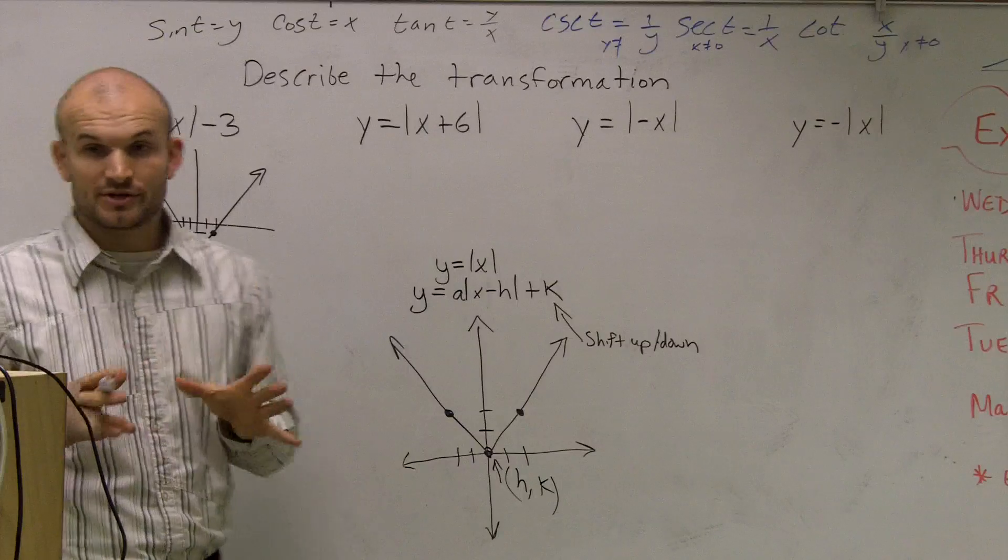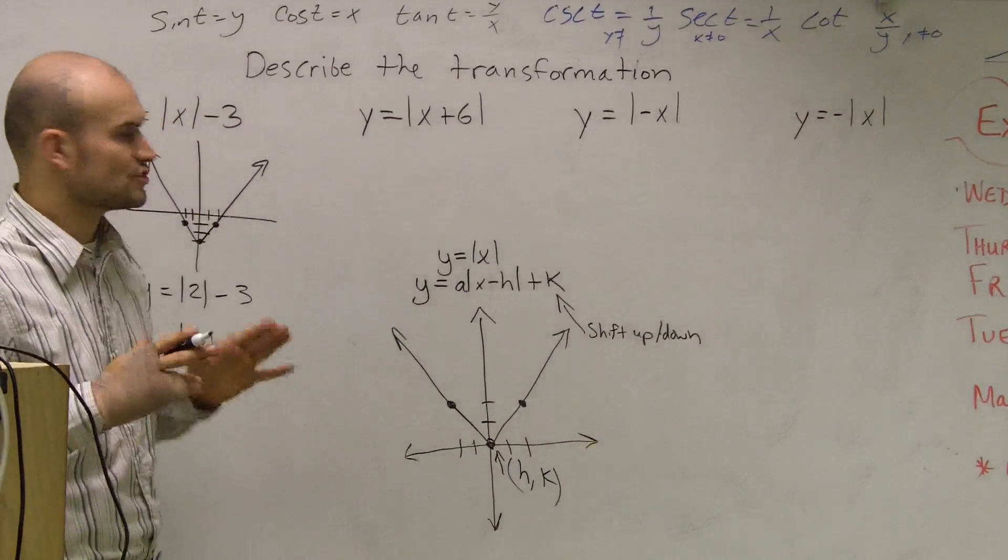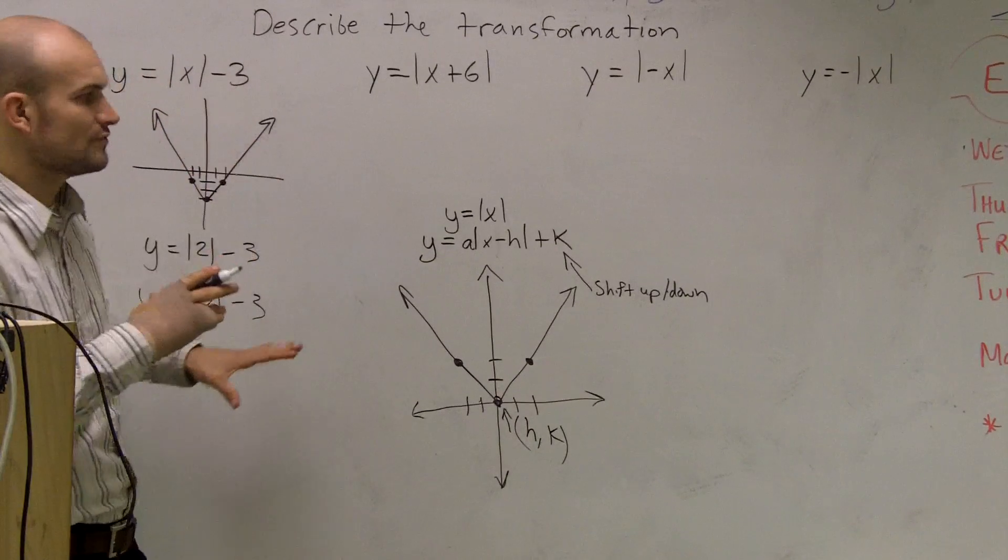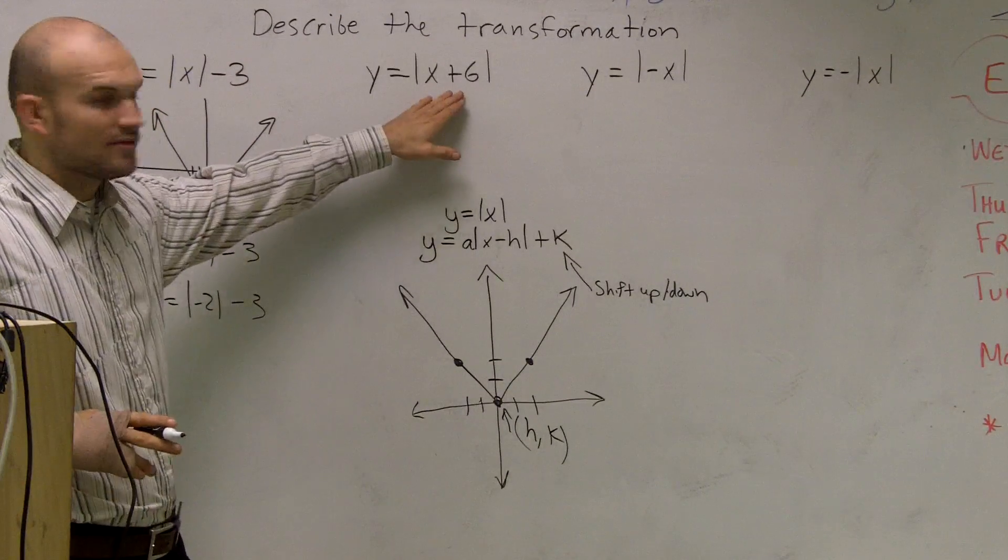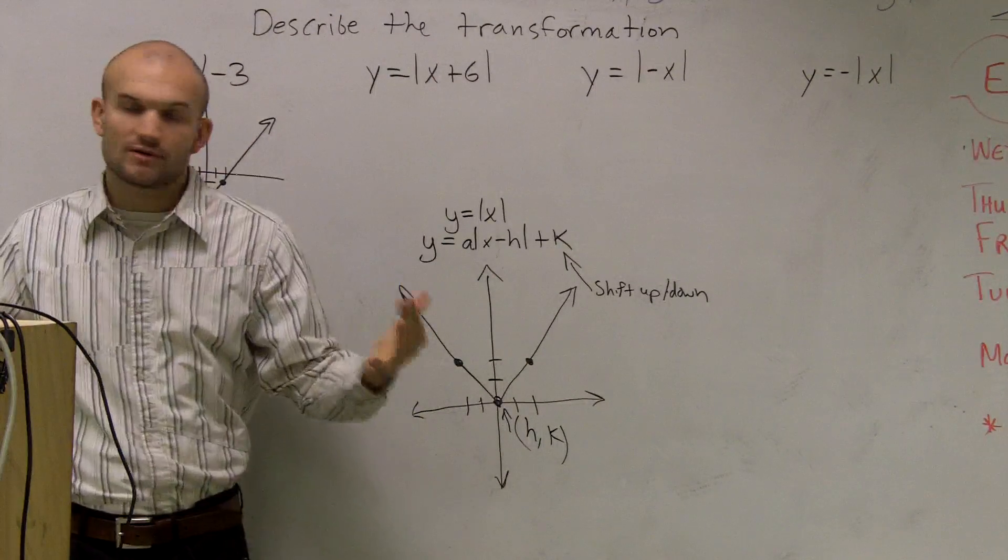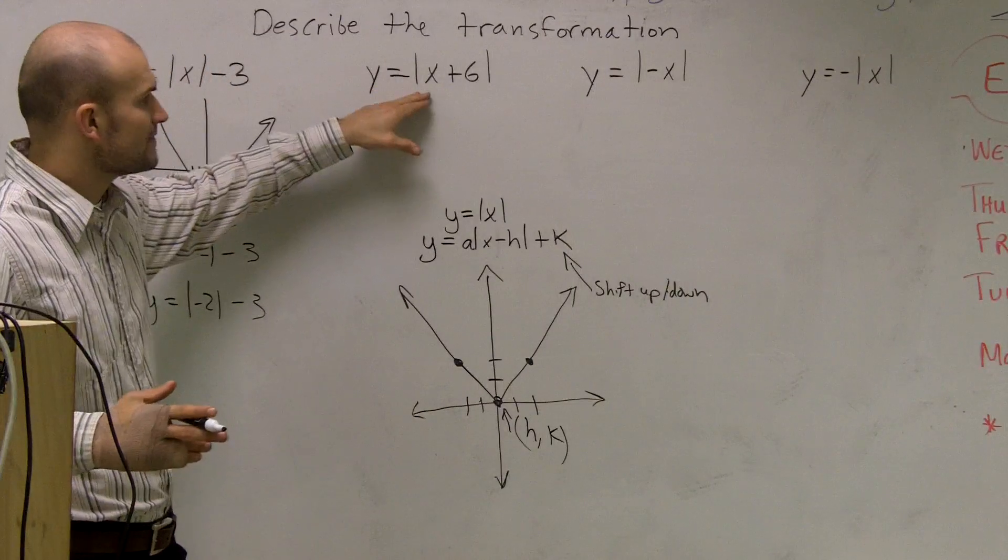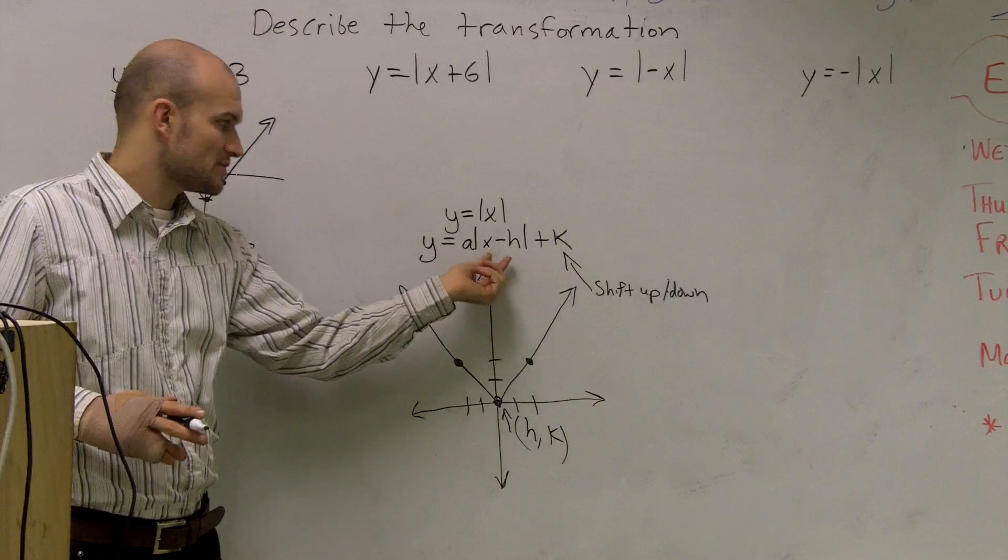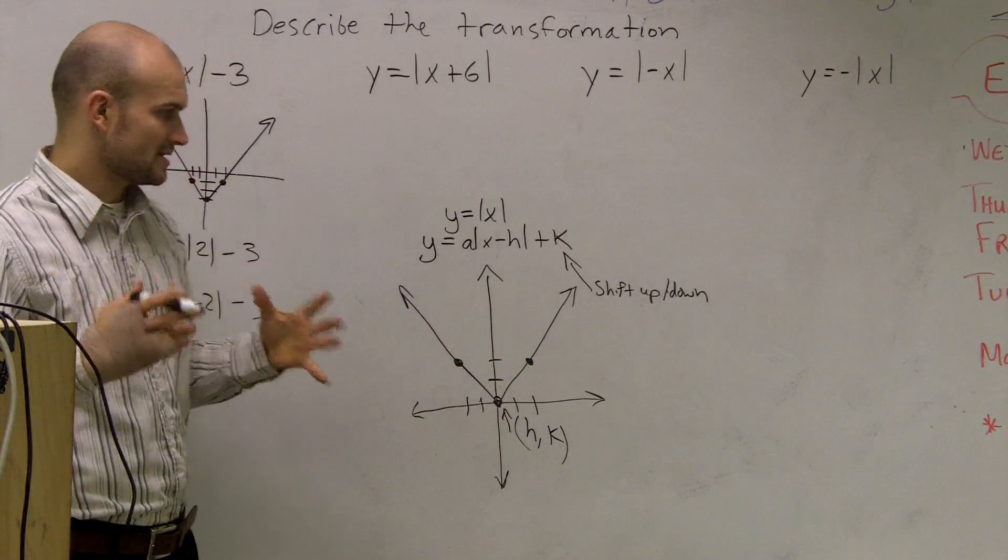Horizontal transformation. This is probably going to be one of the most tricky ones to get because a lot of students get this mixed up with my vertical shift. So here I look at my function. What am I doing to my function? Well, here what I'm doing is I'm adding a 6 inside of the function.